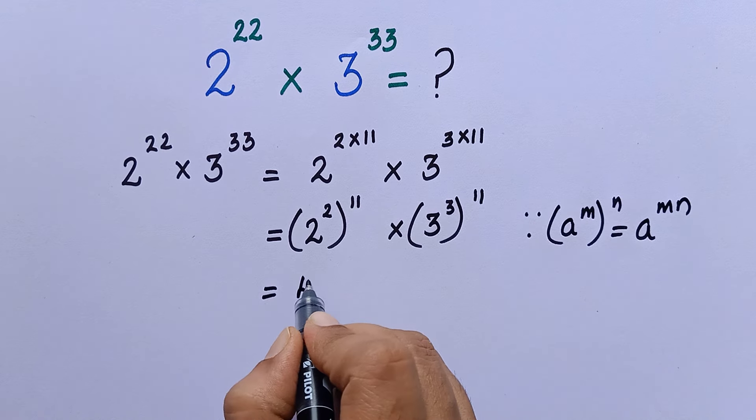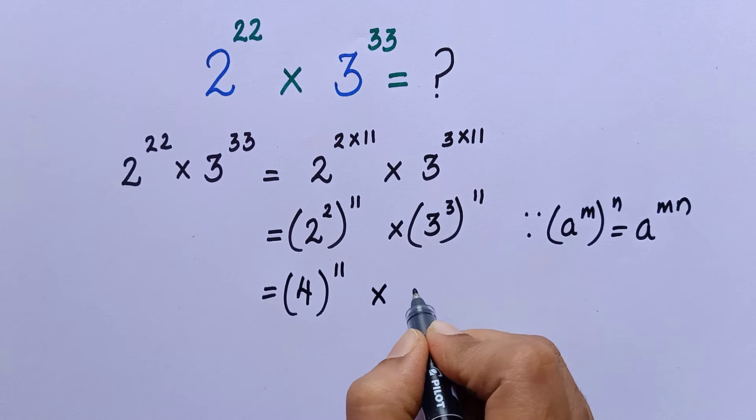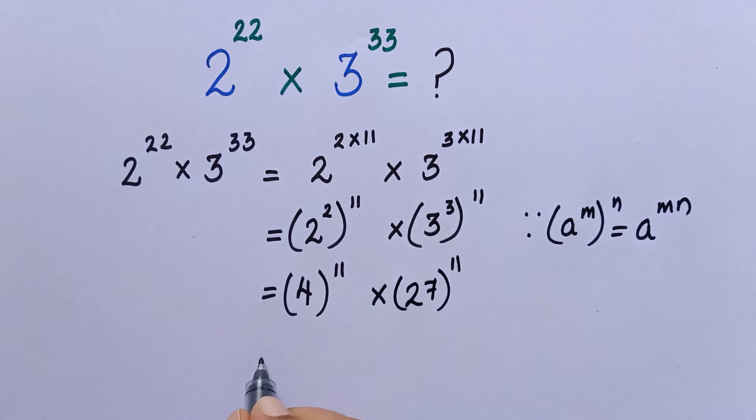Now 2 square is 4, 4 to the power of 11. 3 cube is 27, 27 to the power of 11. Now again making use of one of the laws of exponents when the bases are different and the powers are the same.